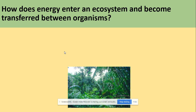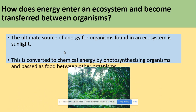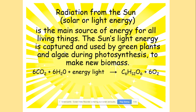How does energy actually enter an ecosystem, and how can energy be transferred between organisms? The ultimate source of energy for organisms in an ecosystem is sunlight. Sunlight is converted to chemical energy by photosynthesizing organisms and is passed as food between other organisms. Sunlight is the most important source of energy that allows photosynthesis to take place and produce glucose — and this is our biomass.